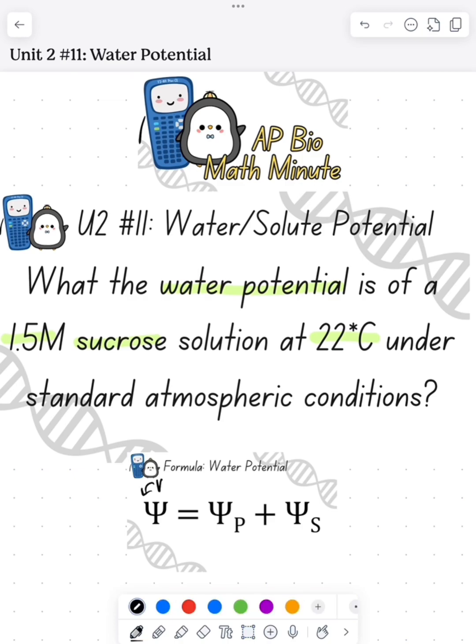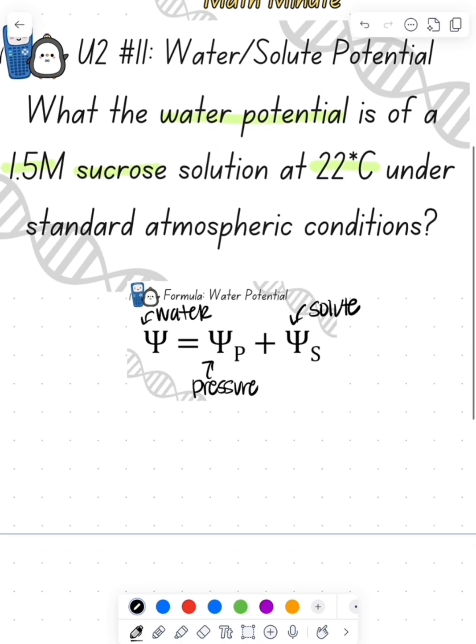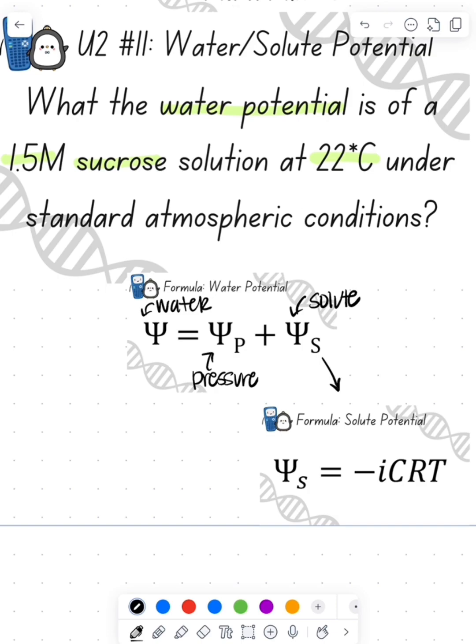First thing always, we look at the equation. Water potential is going to be equal to our pressure potential plus our solute potential. And solute potential actually has another formula that we need to make sure we know, and that's negative I, C, R, T.